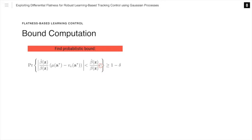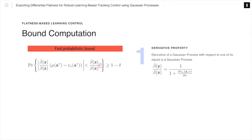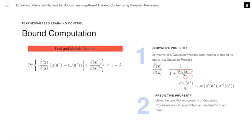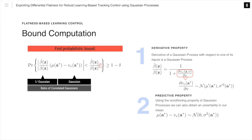We aim to compute bound C that satisfies the following relationship, where delta is some small value. To do this, we utilize two key properties of Gaussian processes. The first property is that the derivative of a Gaussian process with respect to one of its inputs is also a Gaussian process. We can write the ratio of the functions beta-hat from our nominal model and beta unknown in our system in terms of the partial derivative of our unknown function V with respect to one of its inputs. Utilizing this first property, this ratio is 1 over a Gaussian. The second property is the conditioning property of Gaussian processes, which quantifies the uncertainty in our predicted mean. Using results on the ratios of Gaussians, we can analytically compute bound C.